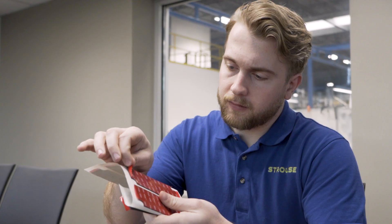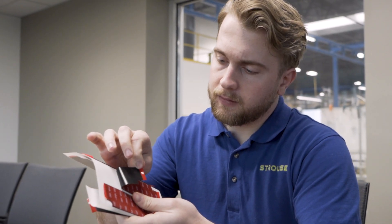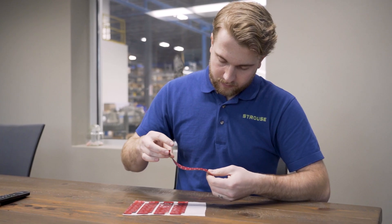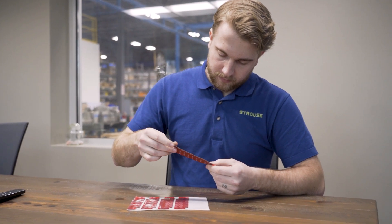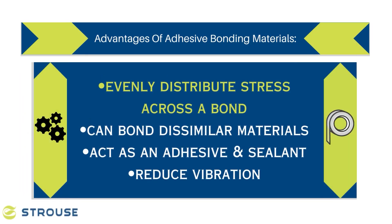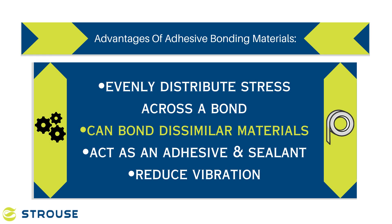Understanding the advantages of adhesive bonding materials is crucial. These materials can reduce labor costs by eliminating the need for drilling holes, while decreasing weight and energy use with thin and light materials. They also evenly distribute stress across the bond, act as both a sealant and an adhesive simultaneously, and reduce vibration in the final product. The choice of materials should consider the specific characteristics of substrates, including their surface energy.